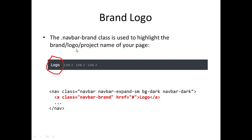The brand class is used to highlight the brand logo or project name of your page. To create a brand logo, we use an anchor tag — it can be a link pointing to your home page or another page. We use class equals navbar-brand and place the logo text there. The logo can also be an image if you want to use an image instead of just text.